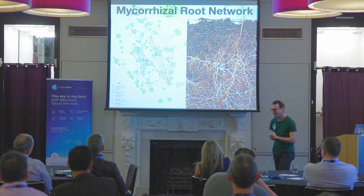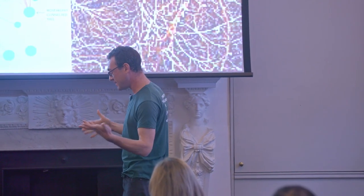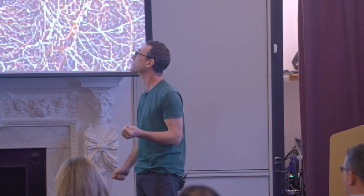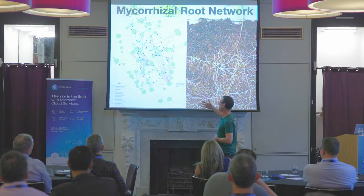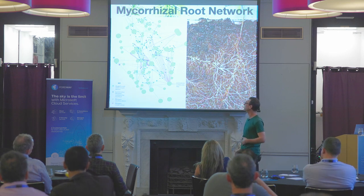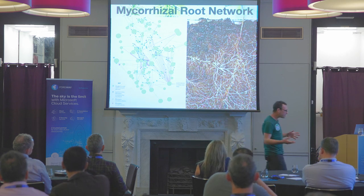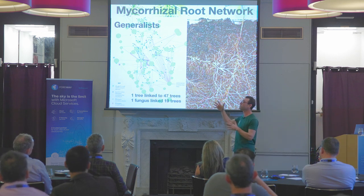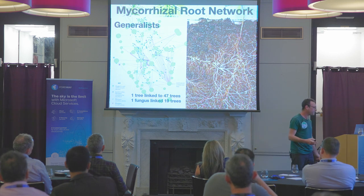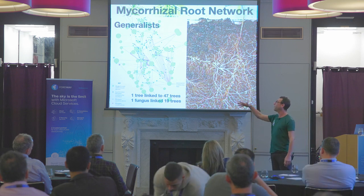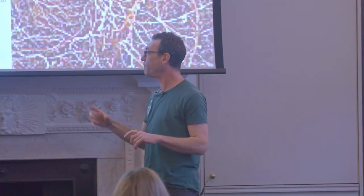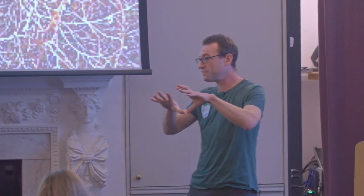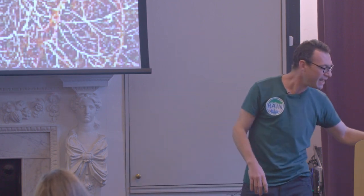The mycorrhizal root network connects trees beneath the ground so they can trade resources, and inform each other about predators and pathogens. This is a map of fir trees in the Canadian forest done by Dr Suzanne Simard, who is an absolute genius. She noticed and mapped out how they connect. Mycorrhizae — myco is fungus and rhizae is roots, so it's how roots connect to fungus. She found that one tree was linked to 47 other trees via one fungal complex, and one fungus linked 19 trees together. This fungal network spreads through the entire forest and can live for centuries or even millennia.